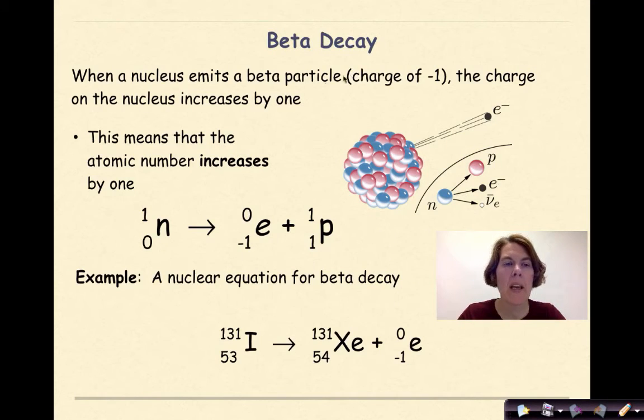Now let's talk about beta decay. When a nucleus emits a beta particle, which will have a charge of negative 1, the charge on the nucleus increases by 1. This means that the atomic number increases by 1. So here's my neutron. When a beta particle is emitted, and here's my beta particle right here, the neutron is going to transform into a proton. And we know that protons are positive. They have a positive charge associated with them.